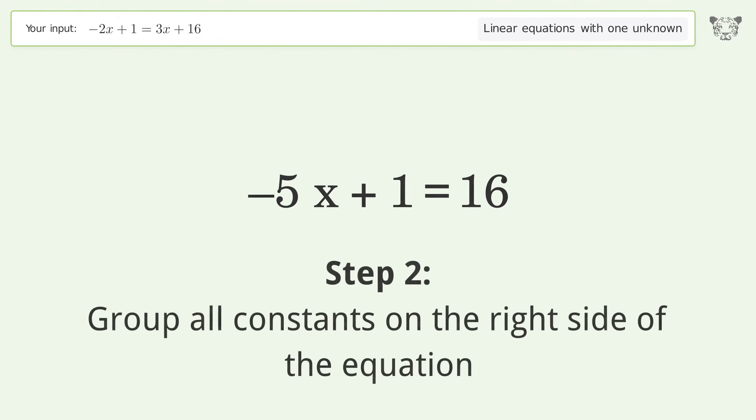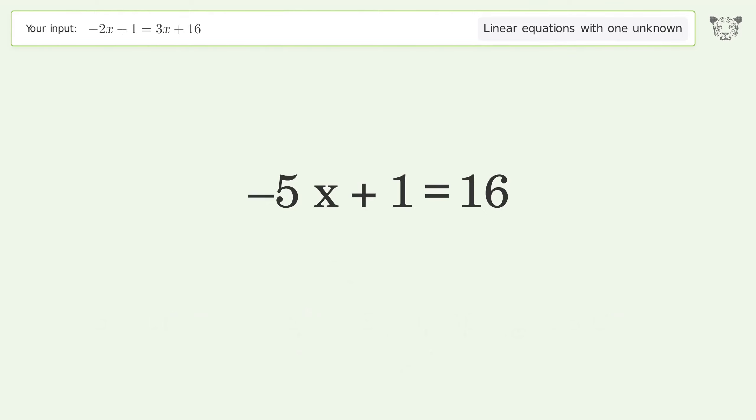Group all constants on the right side of the equation. Subtract 1 from both sides. Simplify the arithmetic.